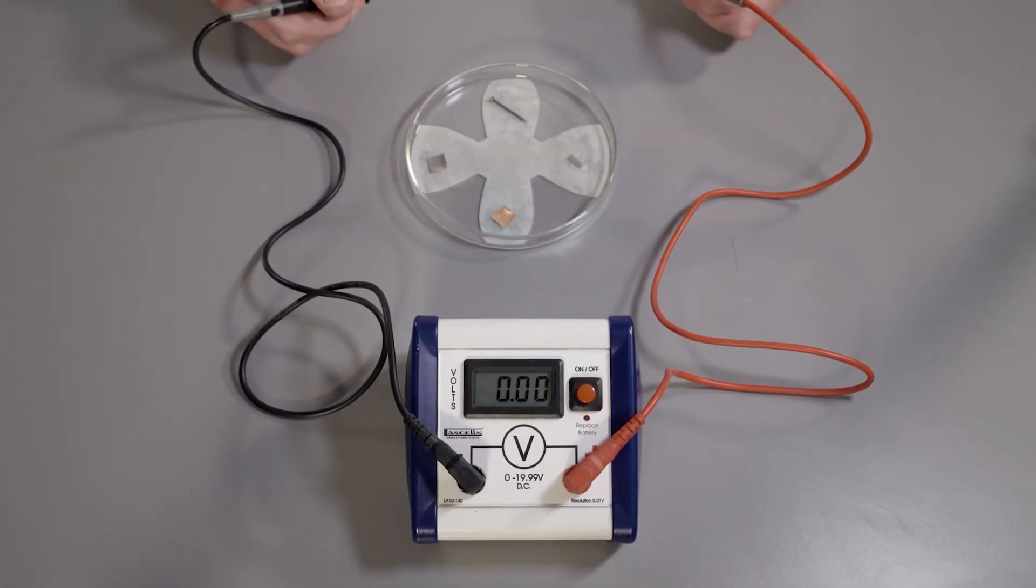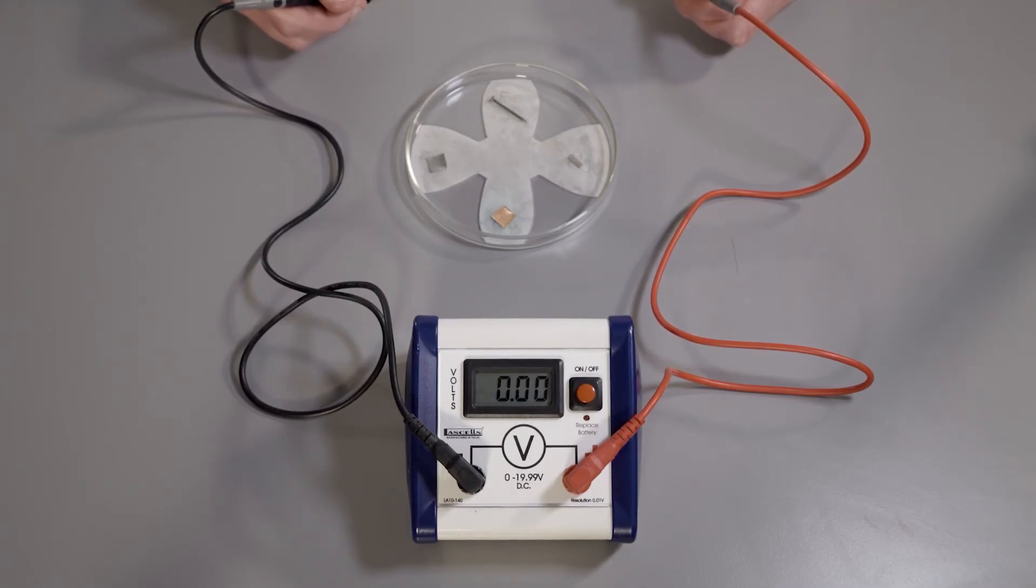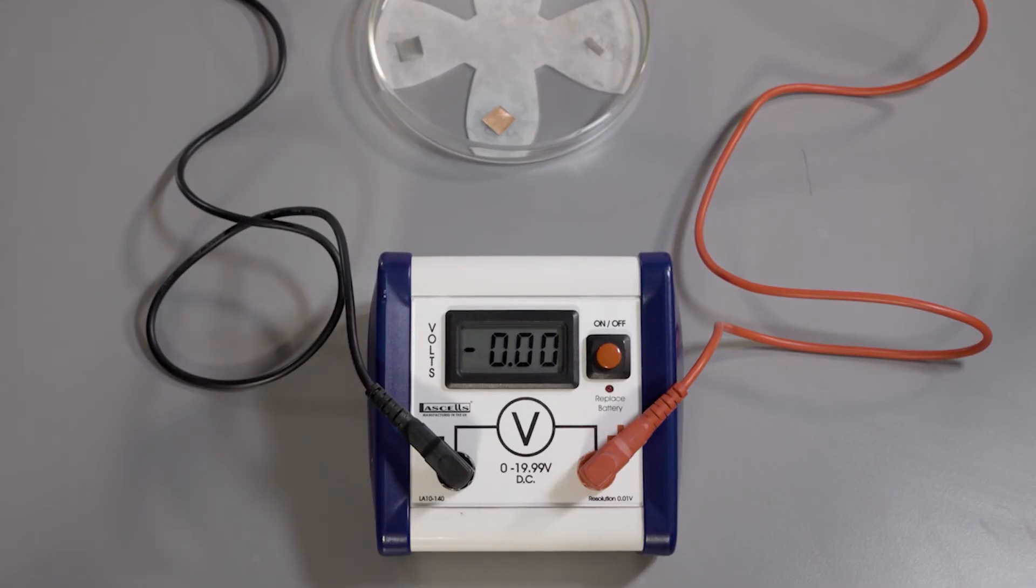We measure the potential difference between the copper and zinc to be 0.96 volts. The potential difference between copper and iron is 0.50 volts. Think about the reactivity series. Which metal, iron or zinc is higher in the series? With this in mind, can you predict what the potential difference between iron and zinc will be? Now let's see if you are right. Let's measure the iron and zinc cell.